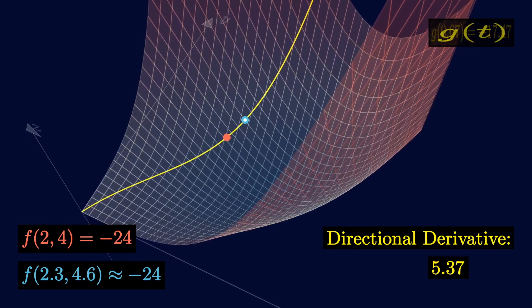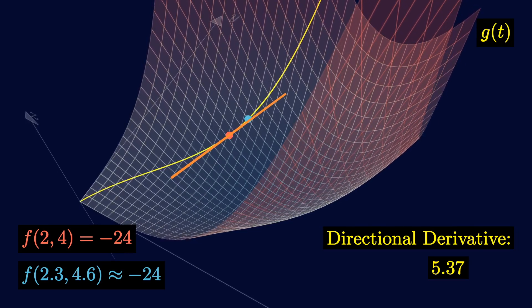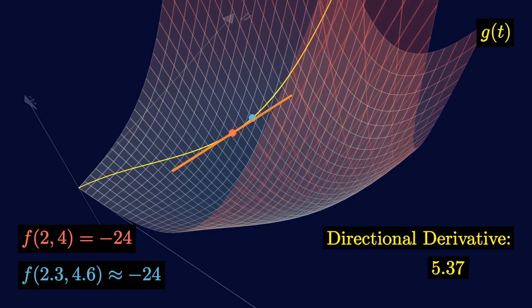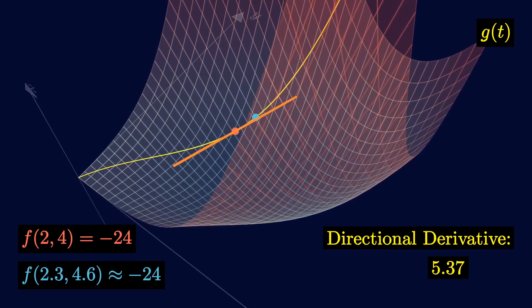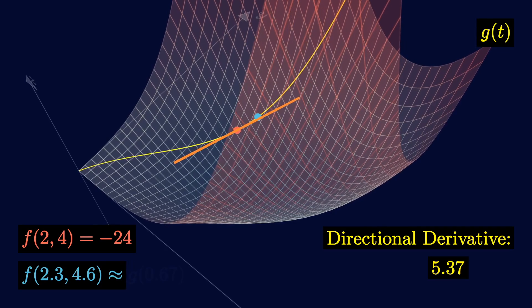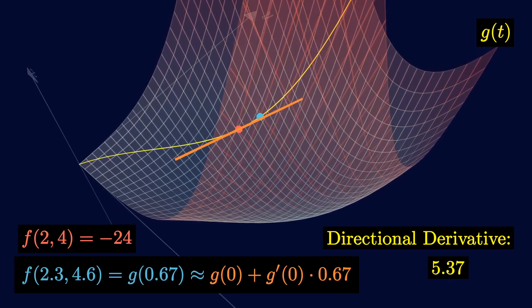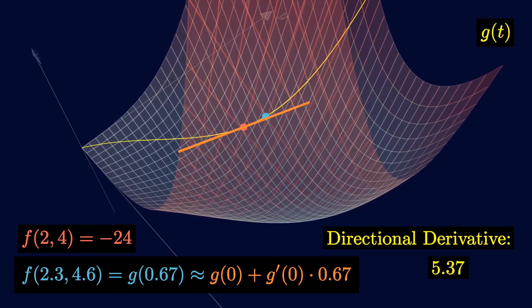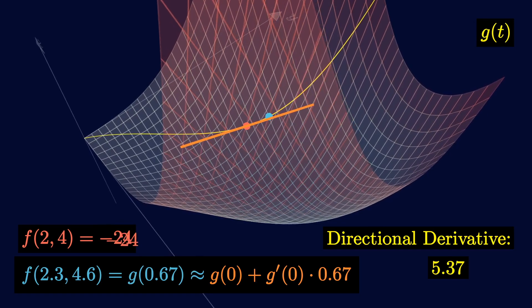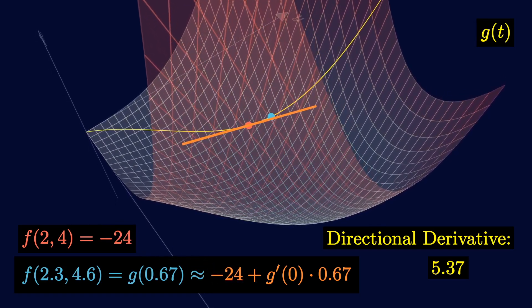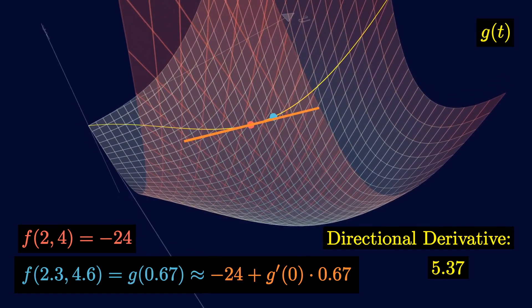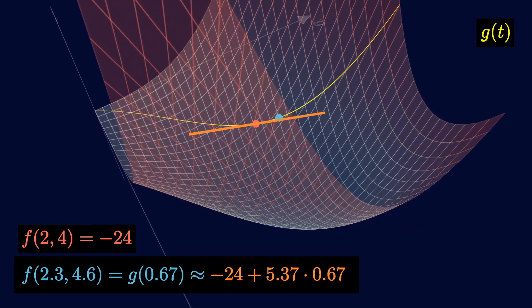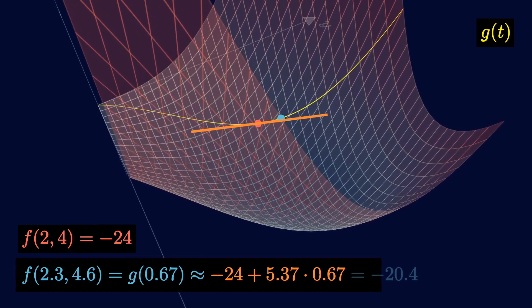Now we can find the tangent line at the red point and use that as an estimate for the blue point. The tangent line approximation for the blue point at 0.67 is going to be g of 0 plus g prime of 0 times 0.67. g of 0 is the red point's value, which is f of 2,4 and is minus 24. g prime of 0 is precisely this directional derivative we calculated before. Working this out, we get an estimate of minus 20.4.